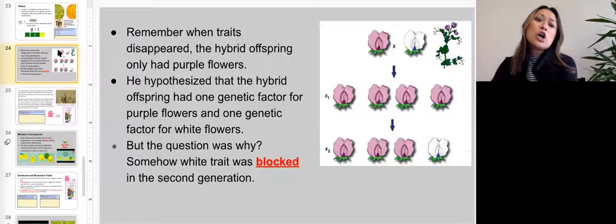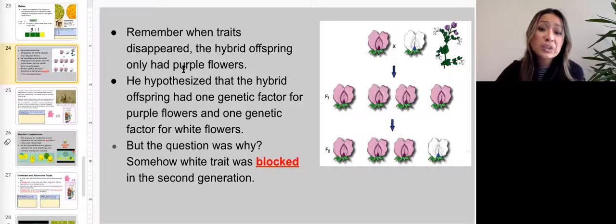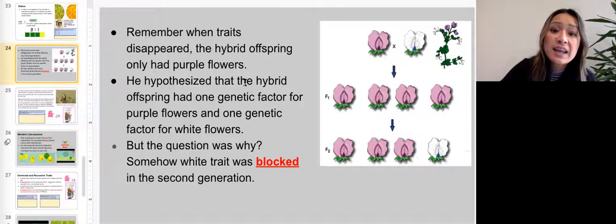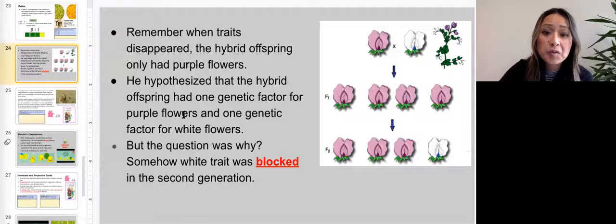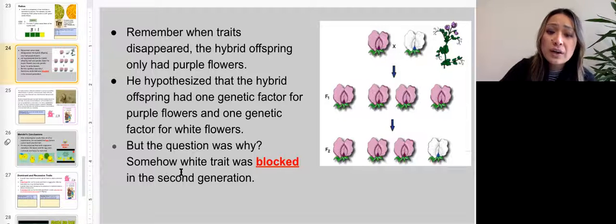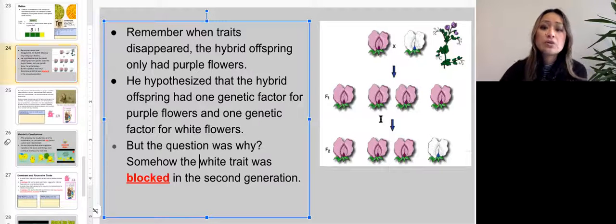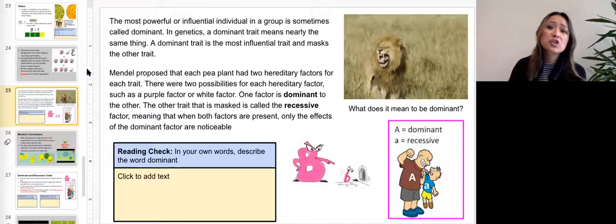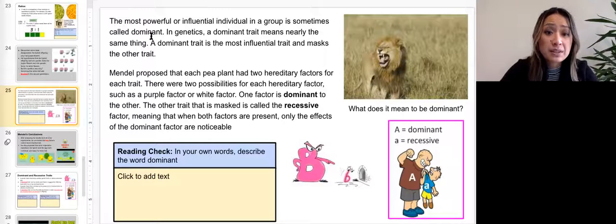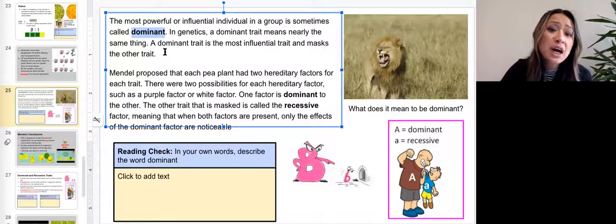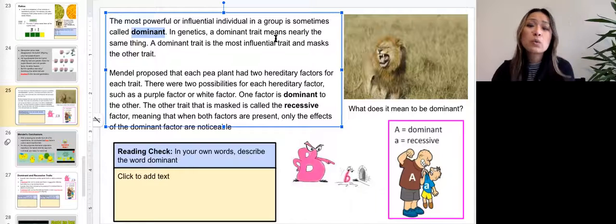Let's go to slide 24. Remember when traits disappeared, the hybrid offspring only had purple flowers. Gregor Mendel, hypothesized that the hybrid offspring had one genetic factor for purple flowers and one genetic factor for white flowers. But the question was why? Somehow the white trait was blocked in the second generation. Somehow this white trait was blocked.